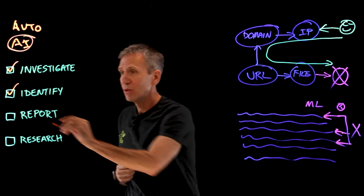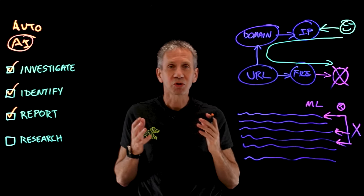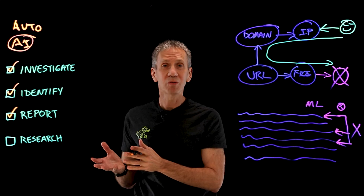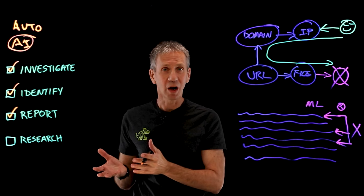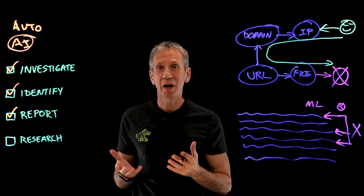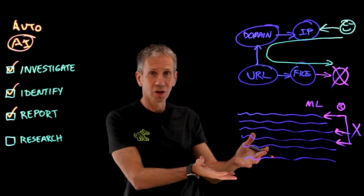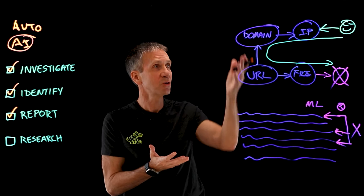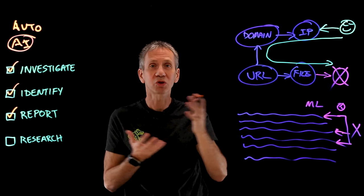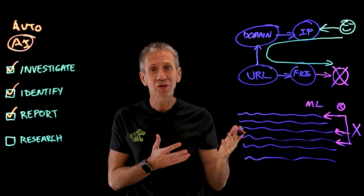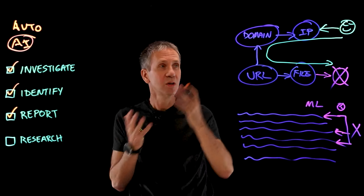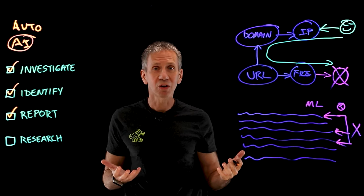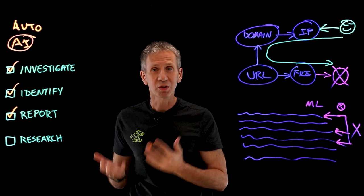What else could we do? We could report. There's a requirement in security circles to report on whether you're complying with regulatory requirements. We can gather log records and process those, and we can use information gained from the AI system to enrich our reporting data. This allows us to produce richer reports while spending less time doing it.